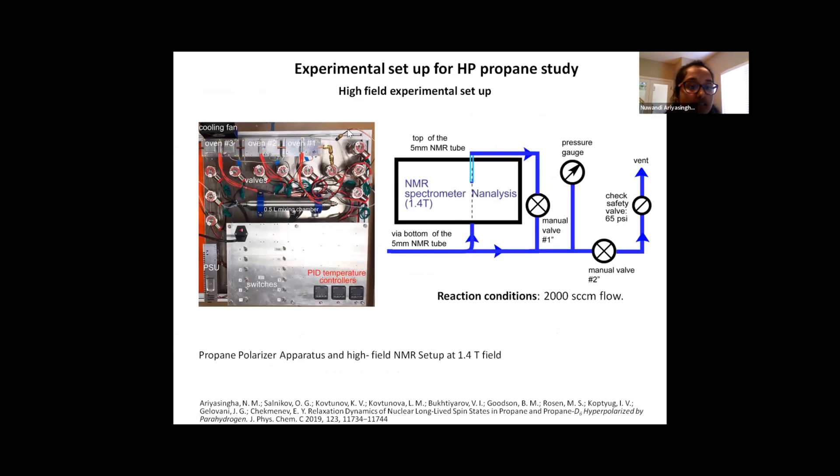So we acquired spectra at a stopped flow condition here. So this ensures an uninterrupted production of hyperpolarized gas during spectral acquisition. So this is the actual picture of how the propane polarizer looks like. And this is the mixing chamber that we talked about in the schematics. And the copper tubing which runs from here all the way to here is the catalytic reactor.